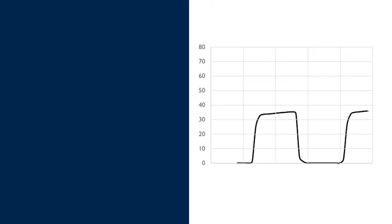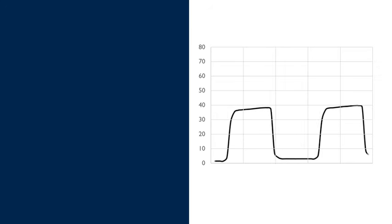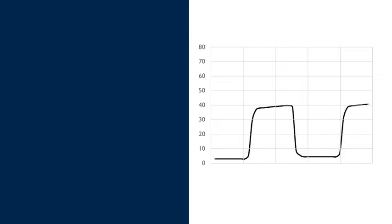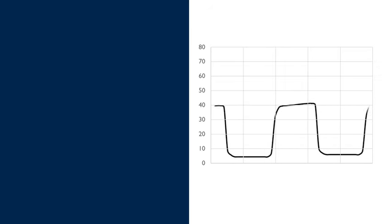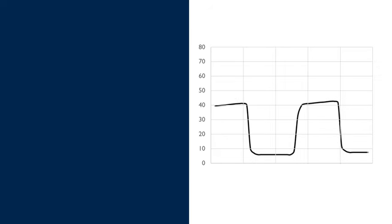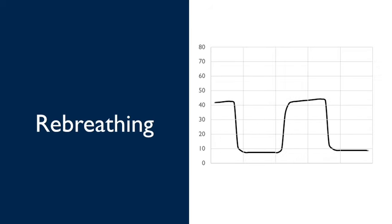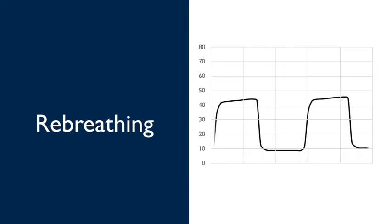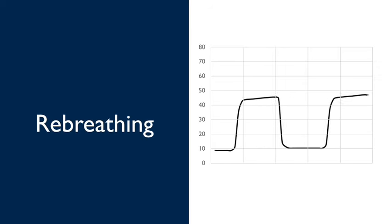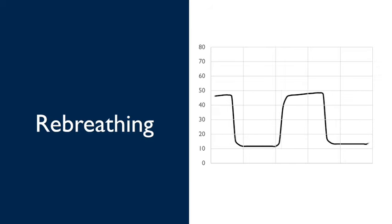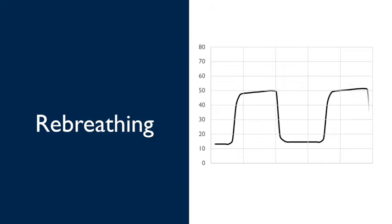Our next example starts off looking just like the previous one, a gradually increasing end-tidal CO2. But here's the difference. The end-tidal isn't returning back down to zero during inspiration. Why? It's because the patient is re-breathing. The patient has too much mechanical dead space, or the expiratory valve is not working, causing the patient to re-breathe all their previously exhaled CO2. The point being, if you see a waveform that looks like this, there may be something wrong with the ventilatory circuit itself.